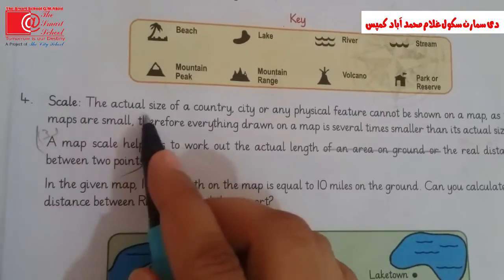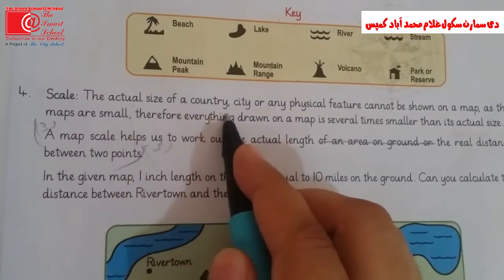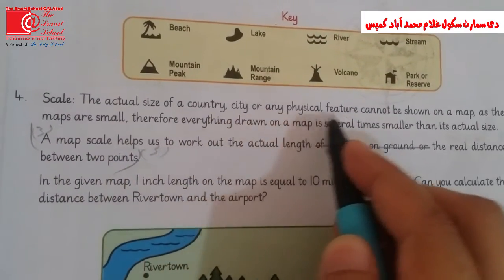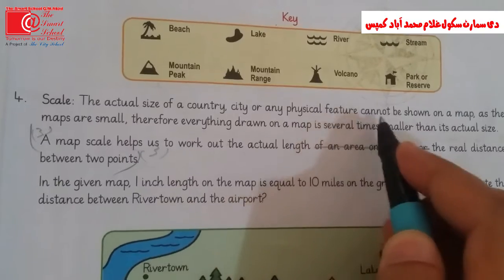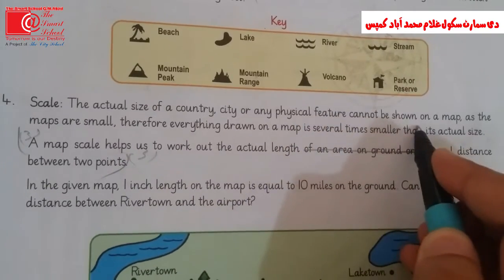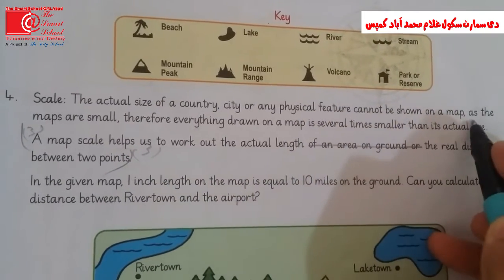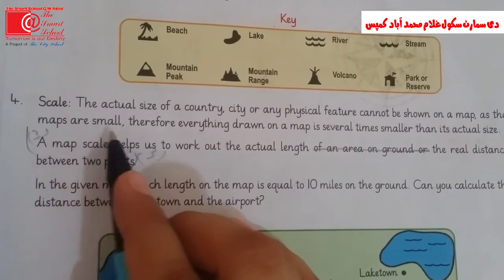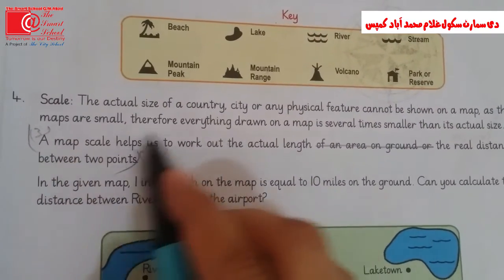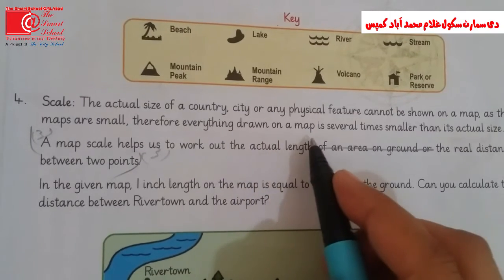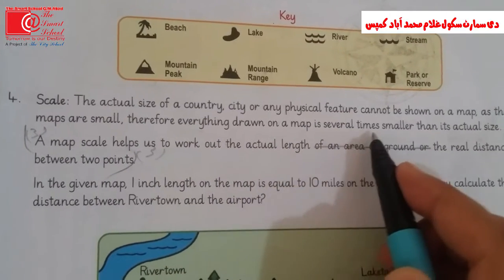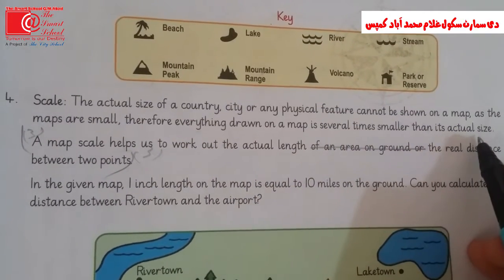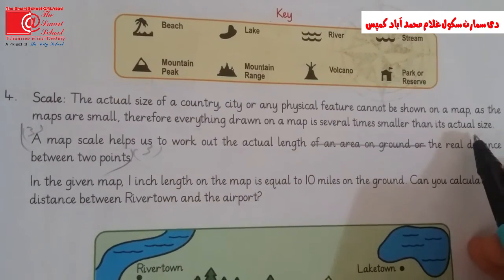The actual size of a country, city, or any physical feature cannot be shown on a map, as maps are small. Therefore, everything drawn on a map is several times smaller than its actual size.